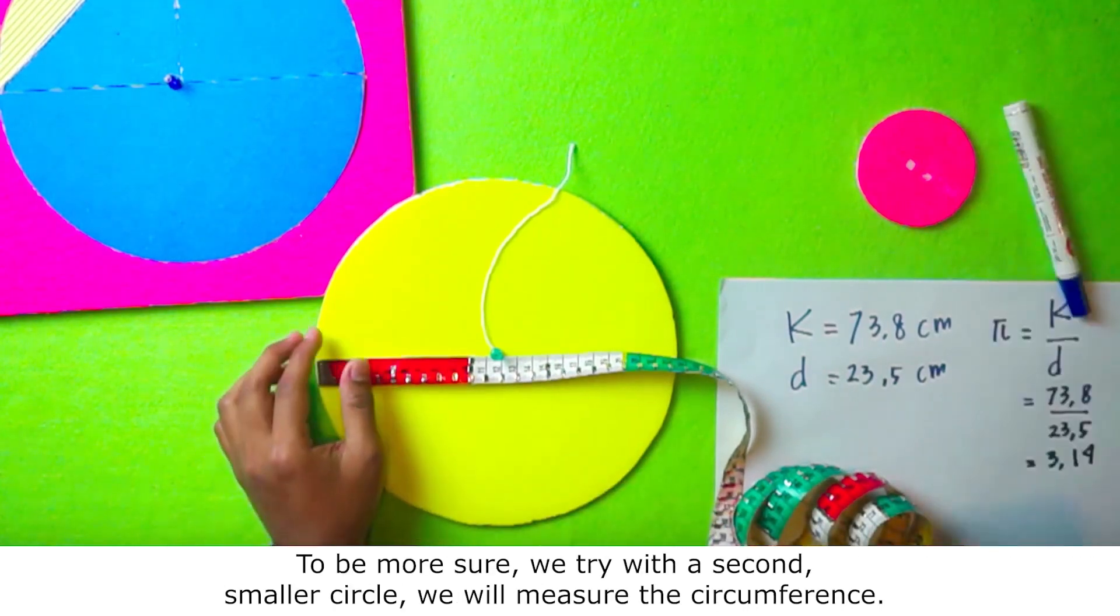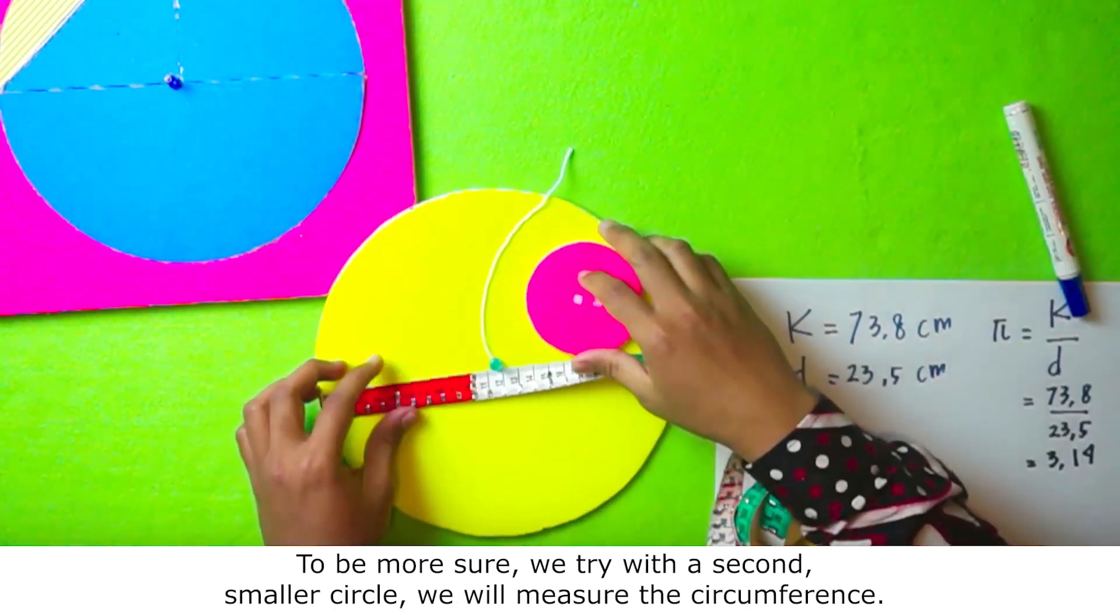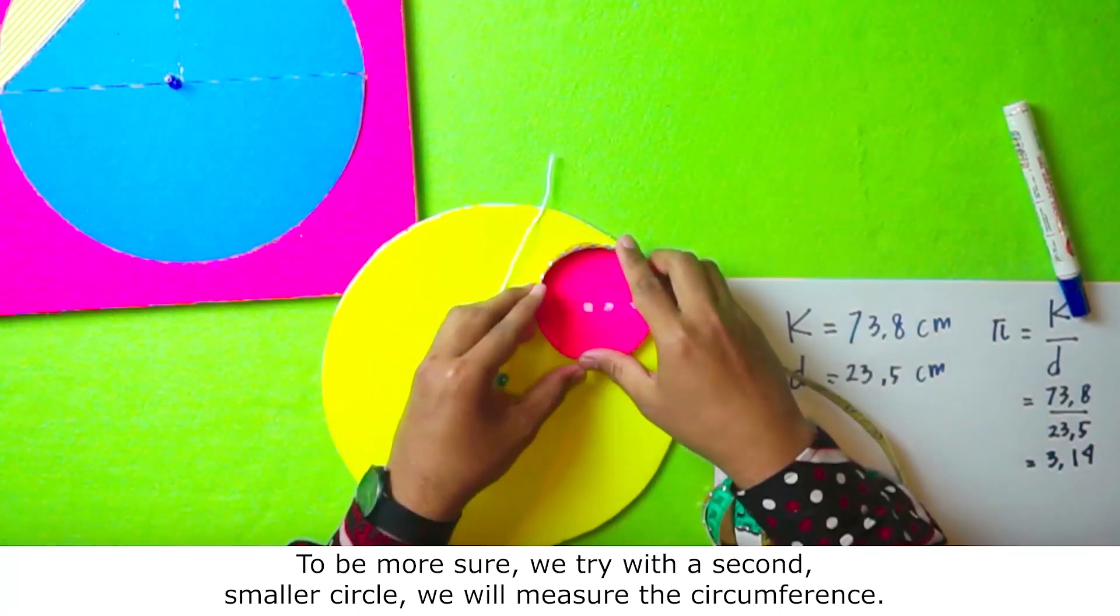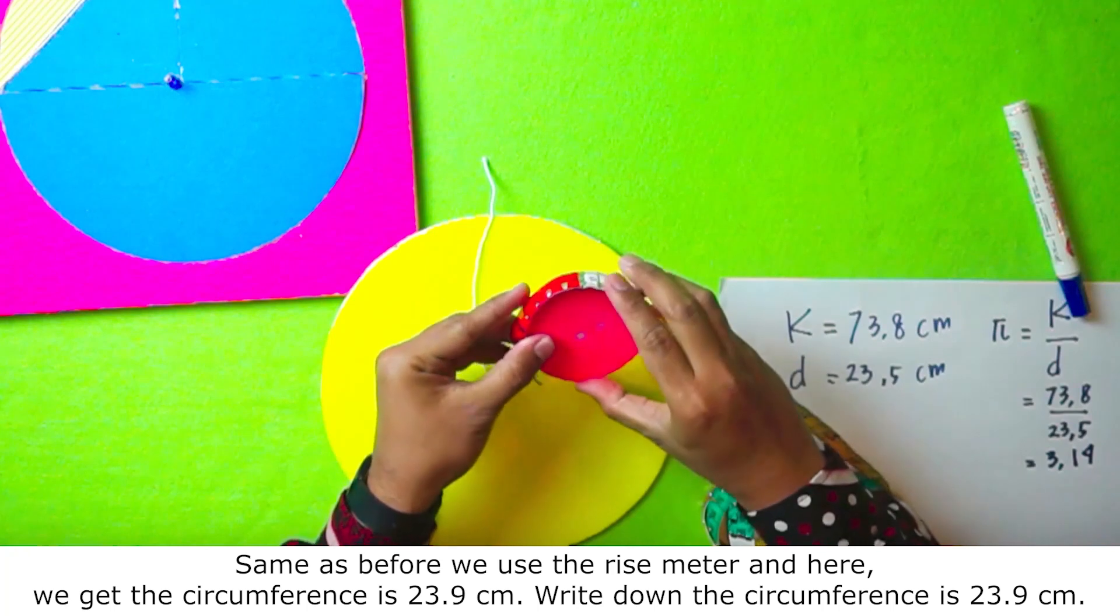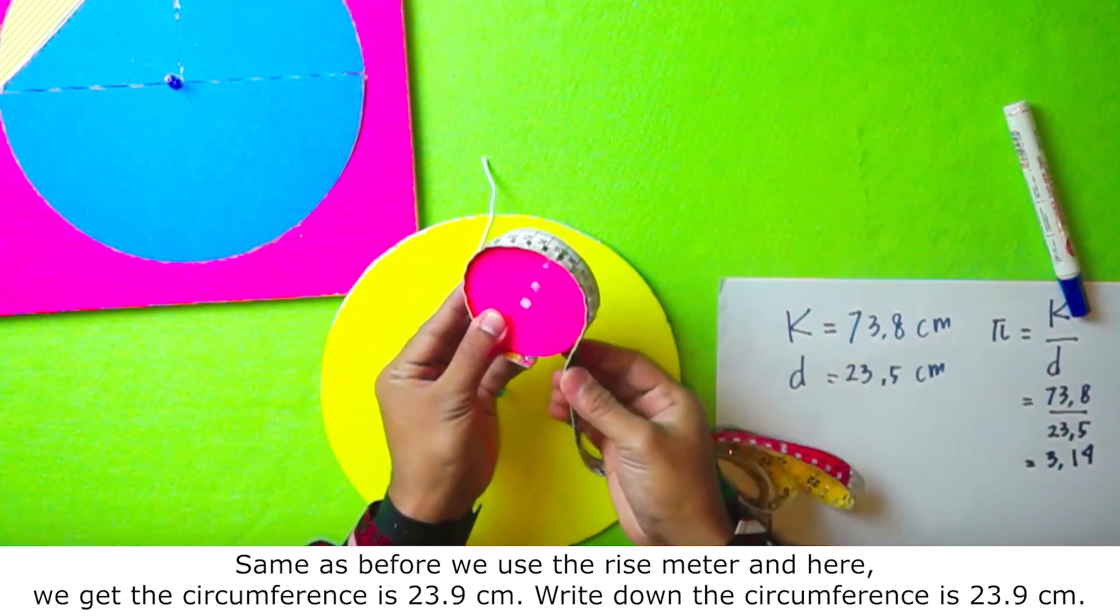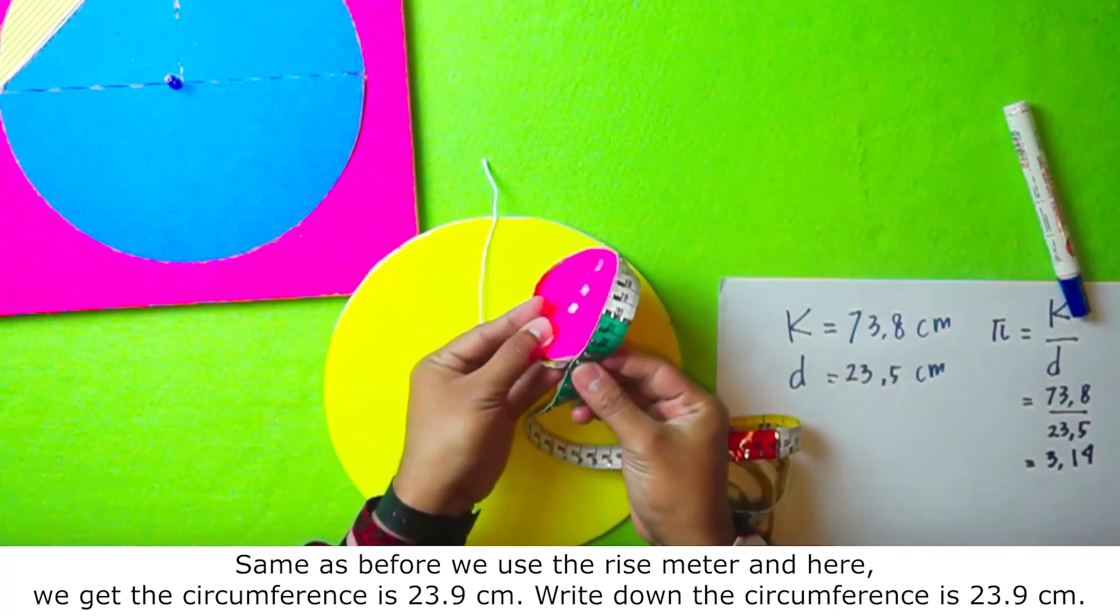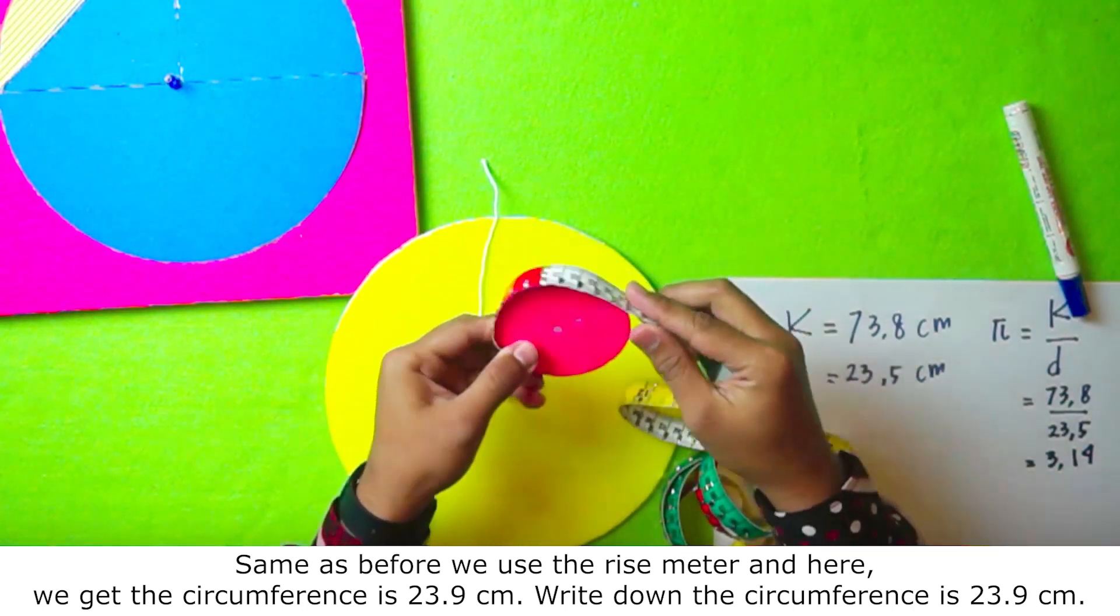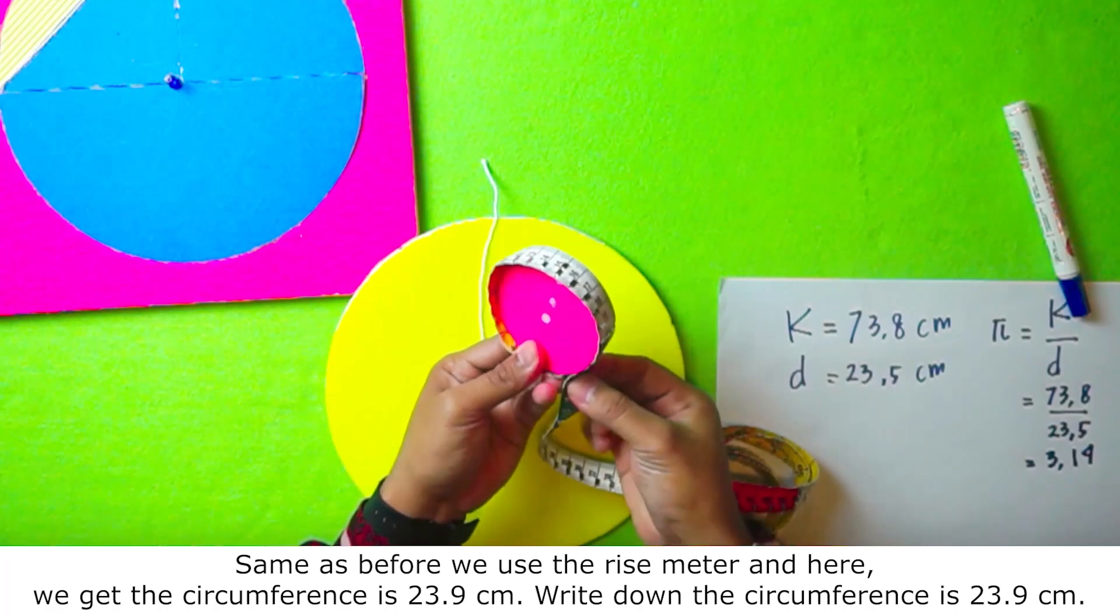To be more sure, let's try with the second circle. It is a smaller circle. We will measure the circumference. As the same as before, we use the rise meter and here we get the circumference is 23.9 cm. Write down the circumference is 23.9 cm.